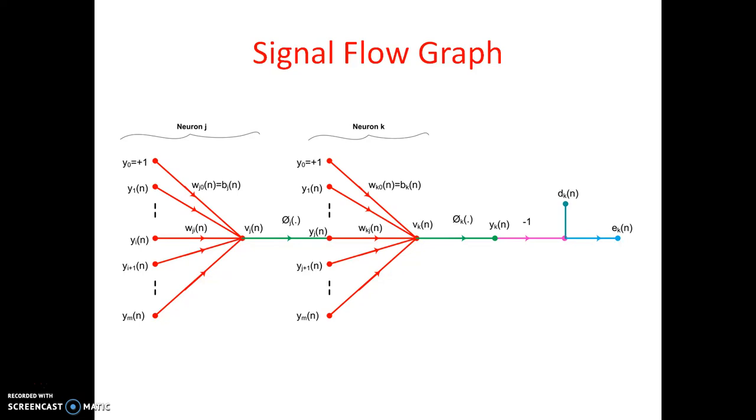That will be the input for the kth neuron. So the output will be, I mean the induced local induced field is Vk of N. So in between the weight is Wkj of N.